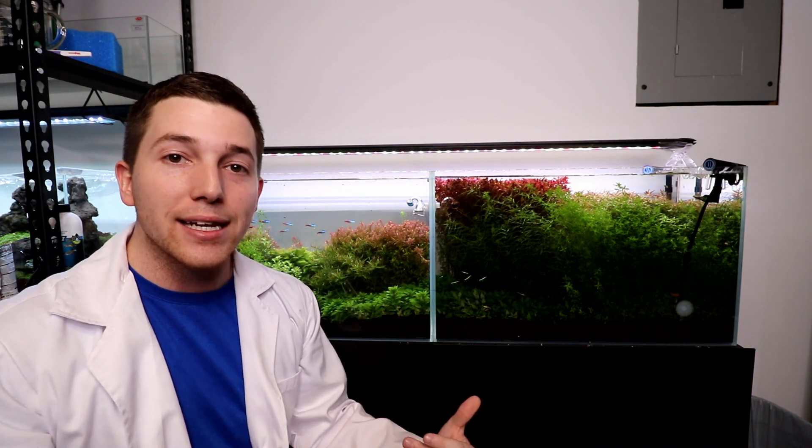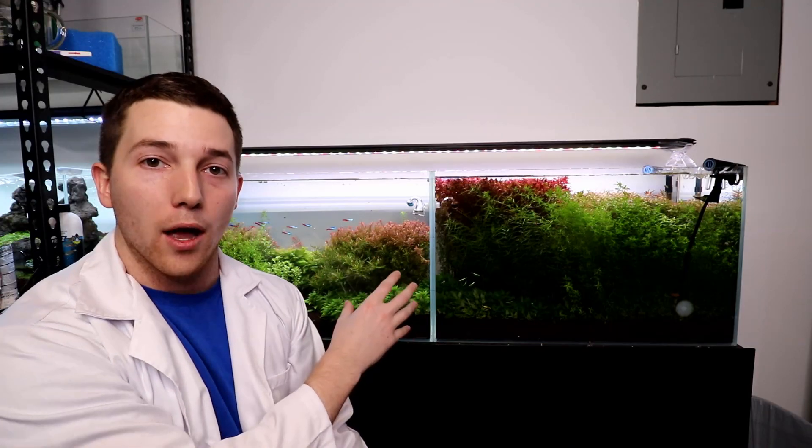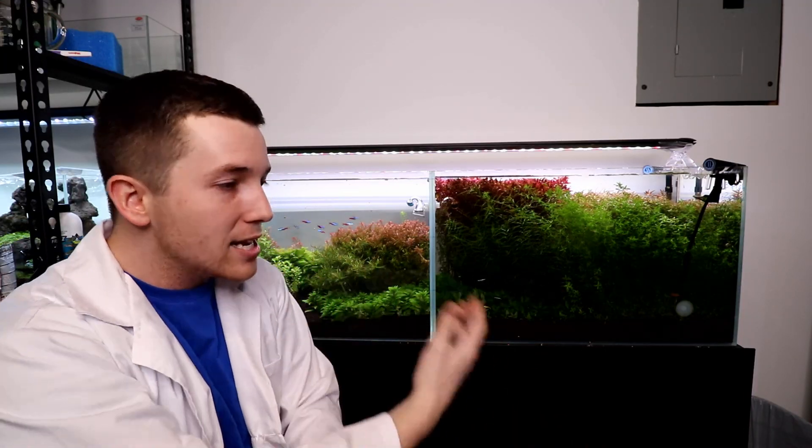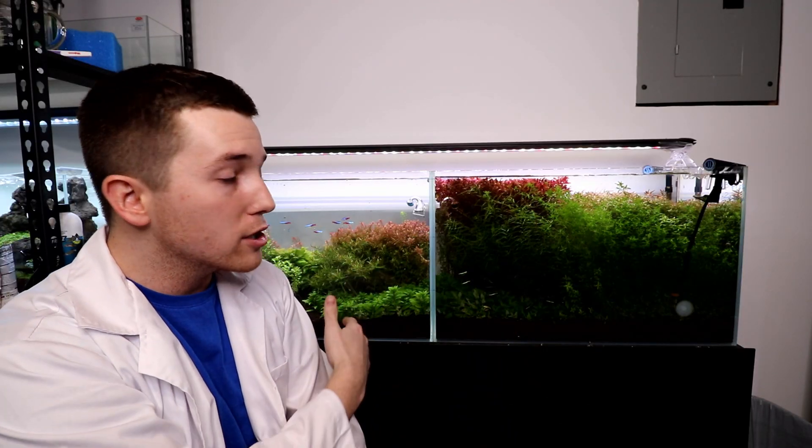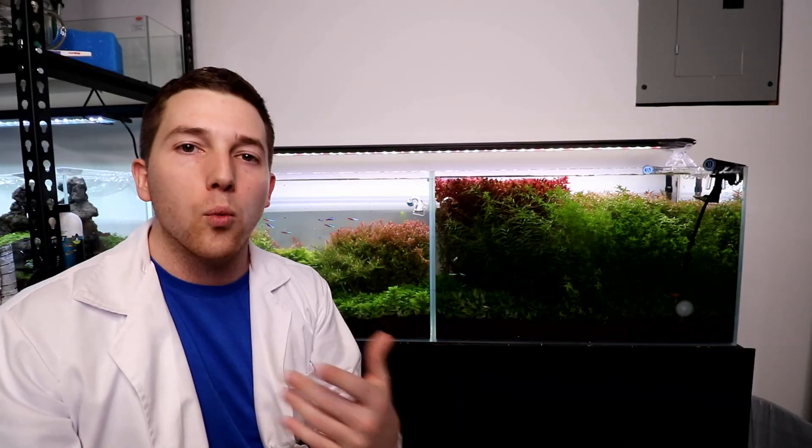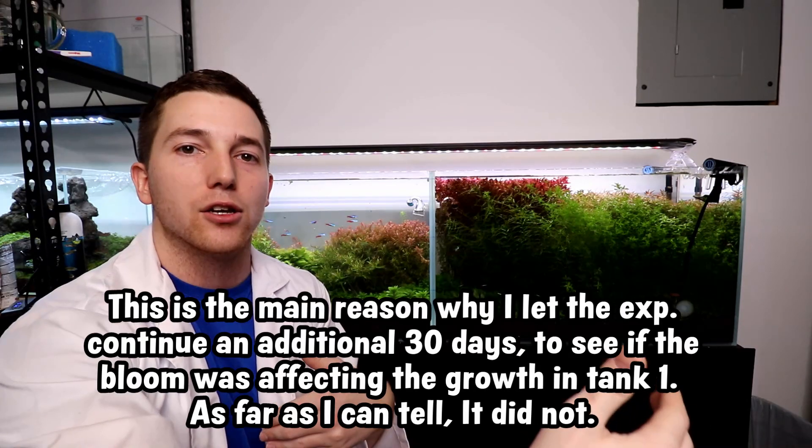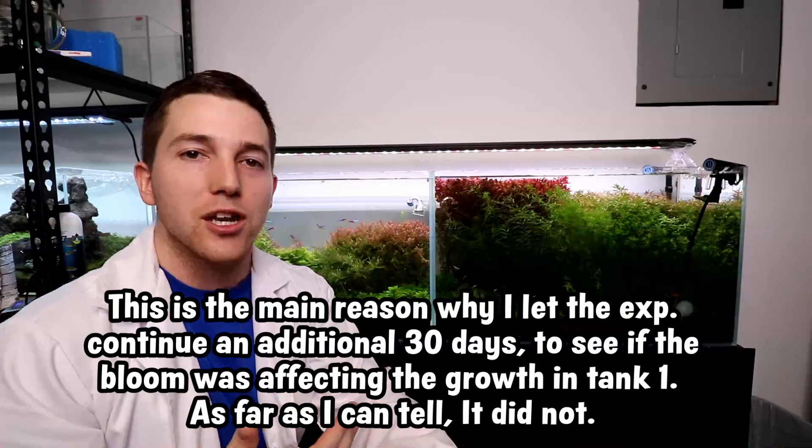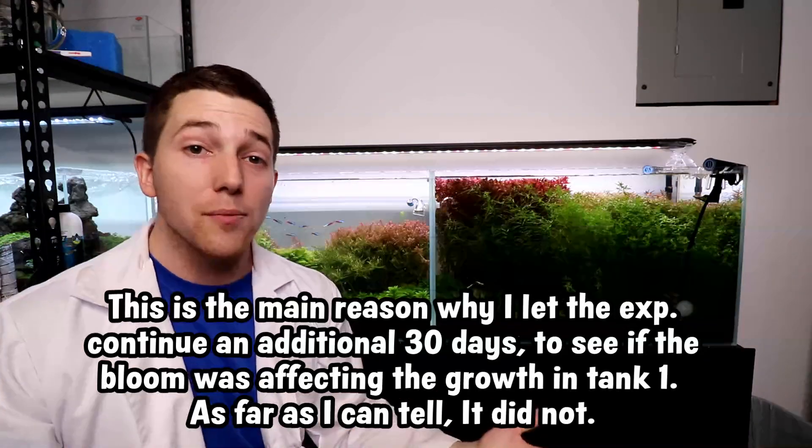One thing that did kind of get in the way, like the first experiment, was the cloudiness came back in tank one. If you guys happen to watch that first video, you'll remember that tank one developed some cloudiness and we suspected it was probably just a bacterial bloom. It eventually went away naturally at the end of the experiment. As we started this experiment, things were all good. It did come back though, and it was around for pretty much the entire experiment. We did one 8.8-gallon water change, we'll show that in the graphs here in just a second.